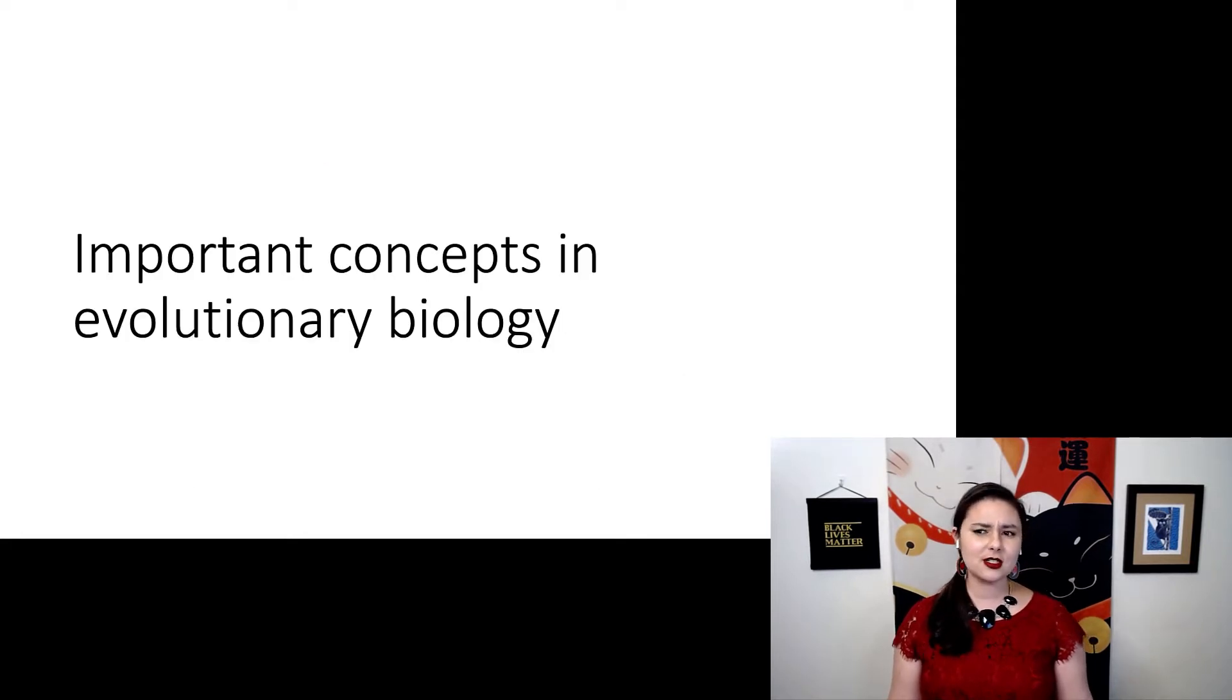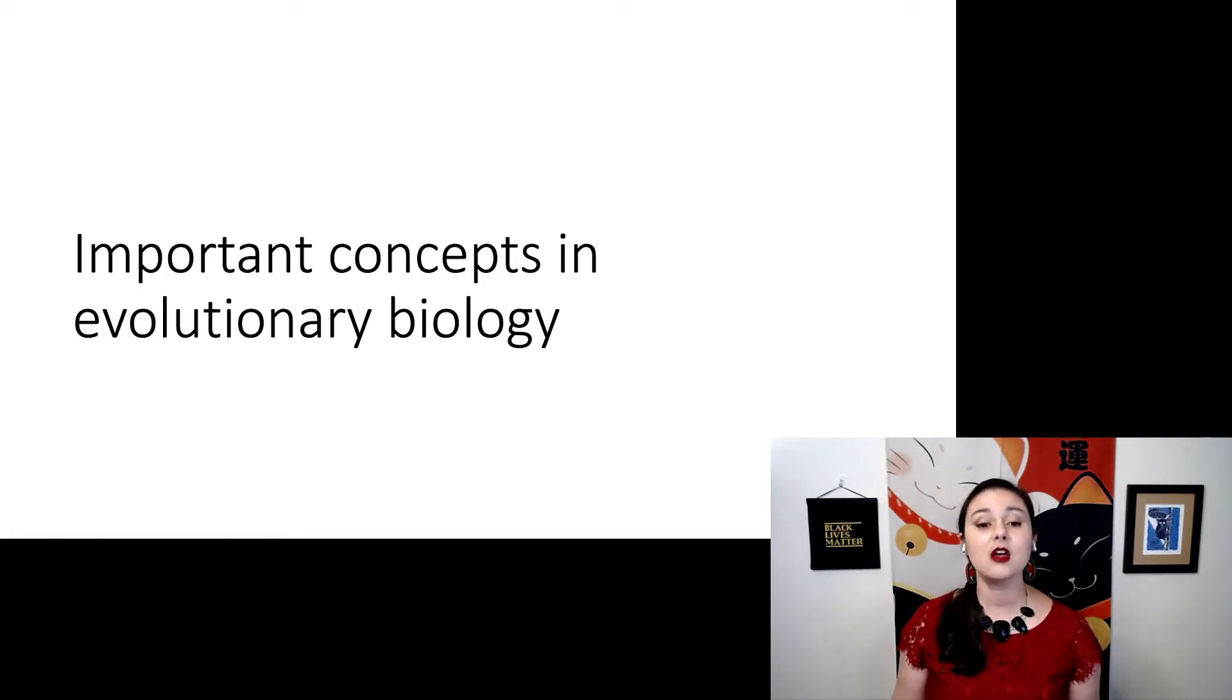But first, let's talk about another important concept in evolutionary biology and how it affects biological anthropology. The first one is the levels of biological organization. And this means we can look at distinct different scales. The first and the smallest is the atom.